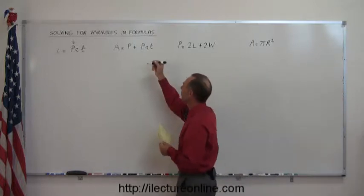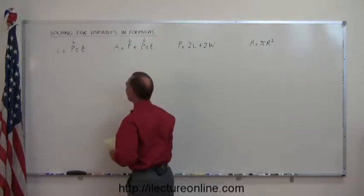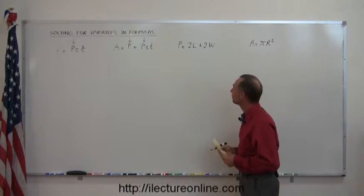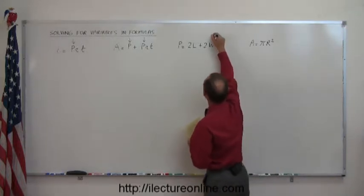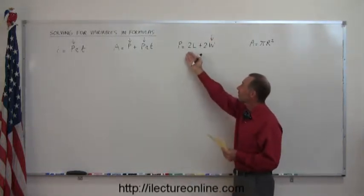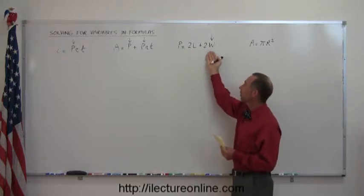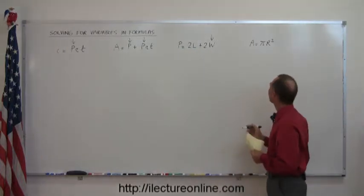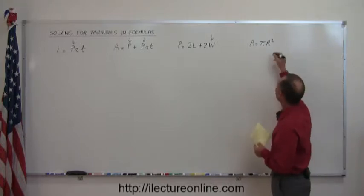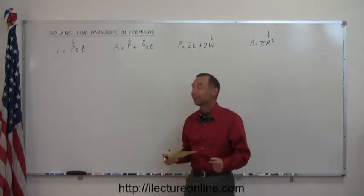For example, if we want to solve this equation for the letter p, notice that p appears twice in that equation. Over here, we want to solve this equation for the letter w — this is the perimeter of a rectangle, which is twice the length plus twice the width. And here, this is the area of a circle, and we want to solve this equation for the letter r. How do we do that?